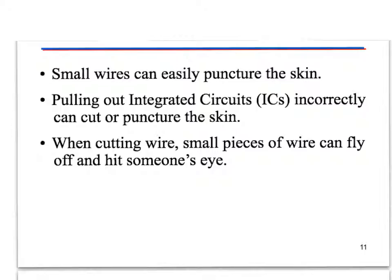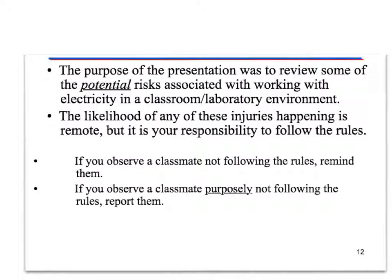Electrical injuries — wounds. Small wires can puncture your skin. Pulling out IC chips can cut or puncture skin, which happens frequently; we do have tools that allow you to pull out an IC chip safely using a small screwdriver or needle nose pliers. When cutting wire, small pieces can fly off and hit someone in the eye. Hopefully from this presentation you understand some of the potential risks associated with working with electricity. The likelihood of any of these happening is very remote, but it's important to follow the rules. If you observe a classmate purposely not following the rules, let me know.